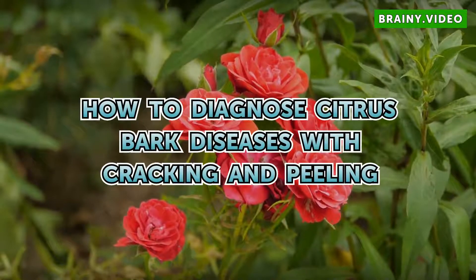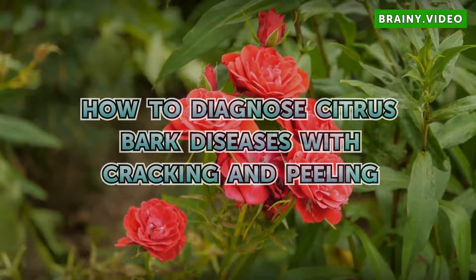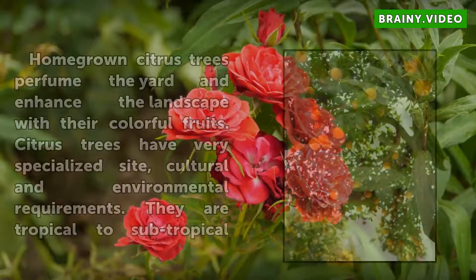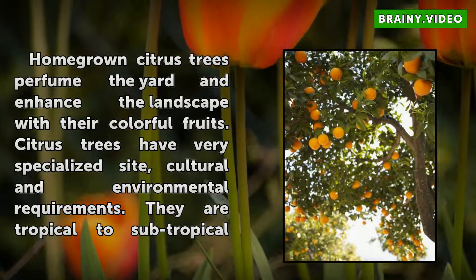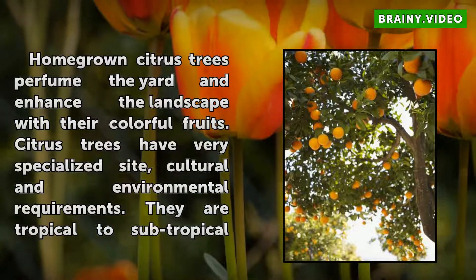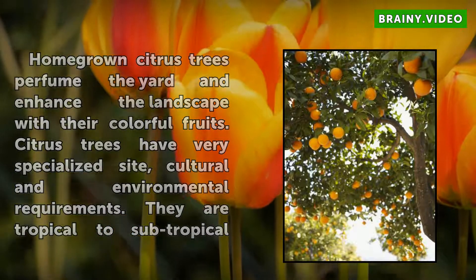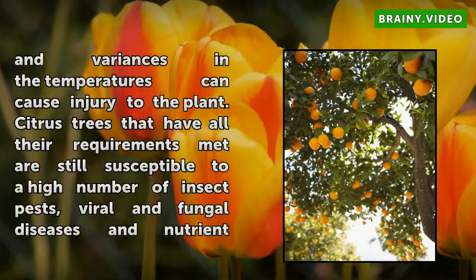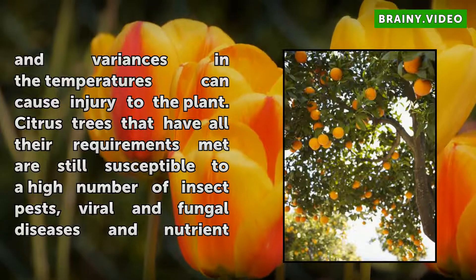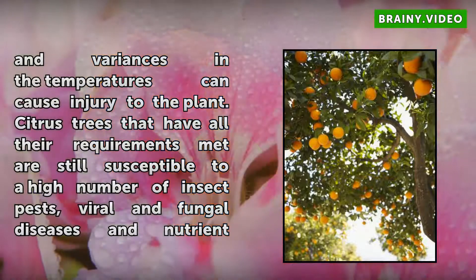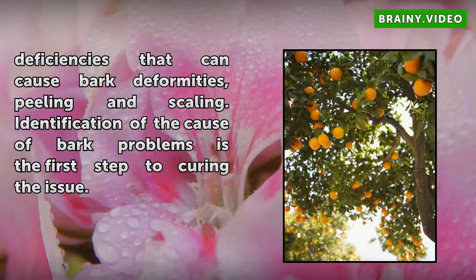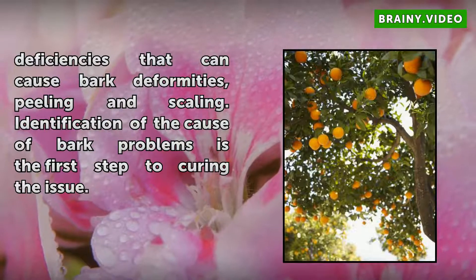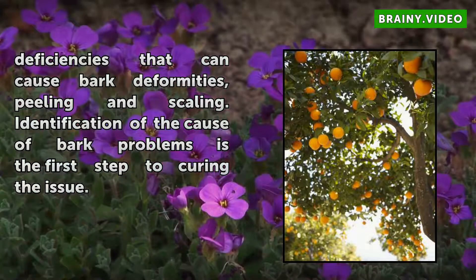Homegrown citrus trees perfume the yard and enhance the landscape with their colorful fruits. Citrus trees have very specialized site, cultural, and environmental requirements. They are tropical to subtropical, and variances in temperatures can cause injury to the plant. Citrus trees that have all their requirements met are still susceptible to a high number of insect pests, viral and fungal diseases, and nutrient deficiencies that can cause bark deformities, peeling, and scaling. Identification of the cause of bark problems is the first step to curing the issue.